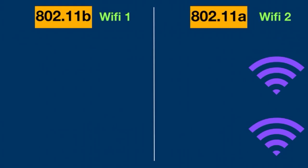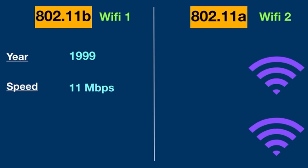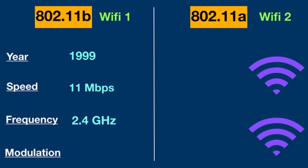802.11b, also known as Wi-Fi 1, was created in 1999. This standard achieved a maximum speed of 11 Mbps and used the 2.4 GHz frequency band. The modulation method it used was DSSS and CCK. 802.11b was the standard that kick-started Wi-Fi's popularity.